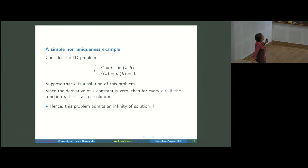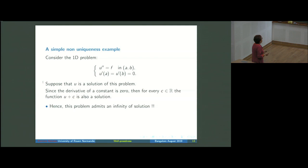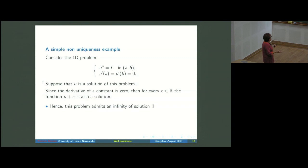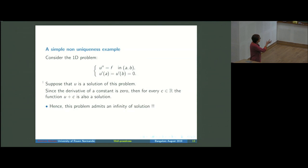A simple example of non-uniqueness: take u'' = f on an interval [a,b] with zero derivative prescribed on both sides. If u is a solution, then u plus any constant c is still a solution, since the second derivative of u + c equals the second derivative of u. So this problem has infinitely many solutions. One must be careful about what conditions to impose in order to achieve uniqueness.